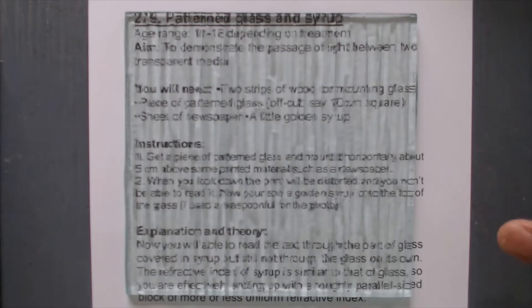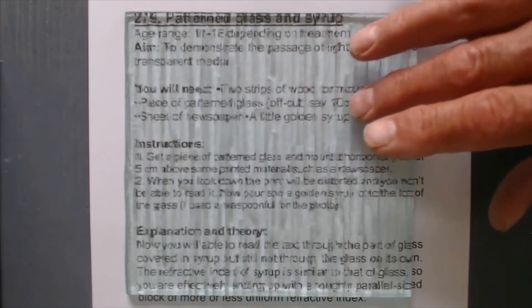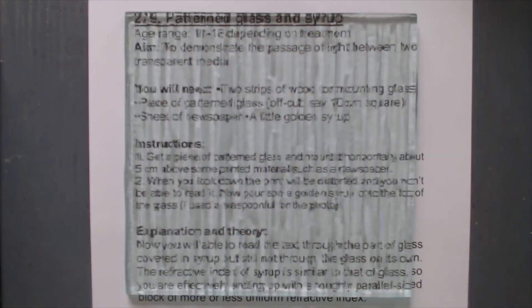Now you can see I've got a sheet of typing on the table with a sheet of patterned glass over the top. This is a sort of wriggly glass you might get if you used it for a toilet window or a bathroom window. And it's really quite difficult to read the typeface below it.